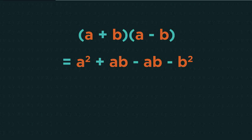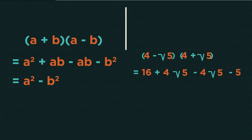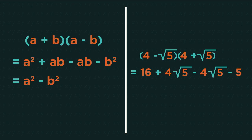So think of expanding brackets and the difference of two squares. We would get a squared plus ab minus ab minus b squared. And the plus ab and minus ab would cancel each other out, leaving us with just a squared minus b squared.